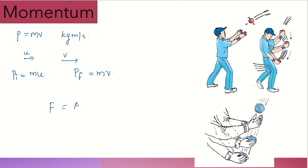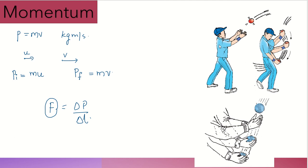Consider the equation F equals delta P divided by delta T. A change in momentum happens during a short interval of time. For example, if a ball goes from 25 meters per second to zero in a very short time, the force acting on the hand of the person catching it is going to be very large. If the time interval is increased, the force is reduced — the impact of the force can be reduced.